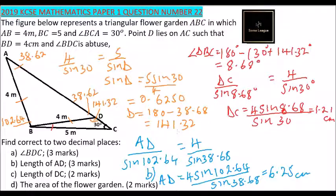Part D, we are told to find the area of the flower garden. We already have this angle, 8.68 degrees. We can use length 4 and length 5, and when you add 102.64 plus 8.68, you get 111.32 degrees.